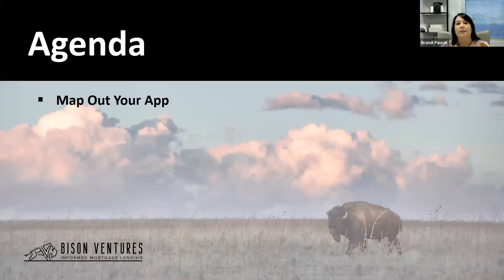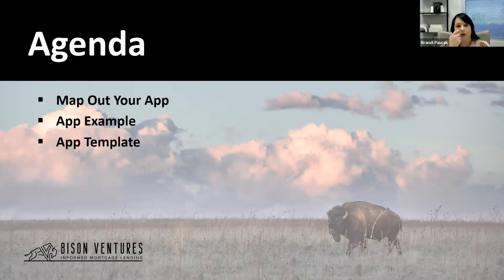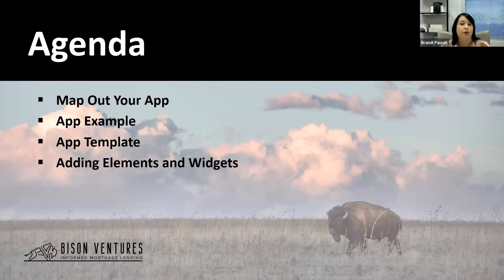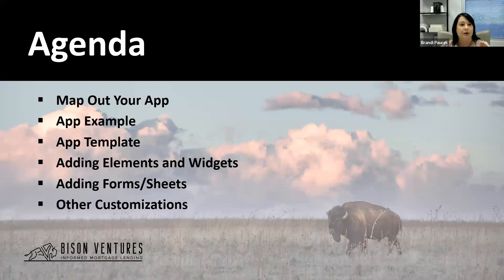Today we're going to be talking about mapping out your app first, and then we are going to look at my current example that I have for you. Then we're going to be looking at the different templates that are available for you to build your app, how to add elements and widgets, how to add forms and sheets, and some other customizations that you can do as well.